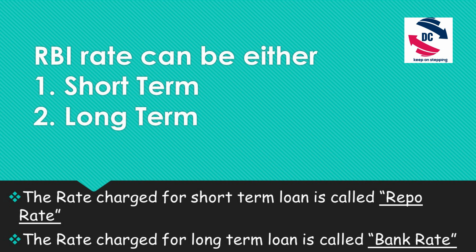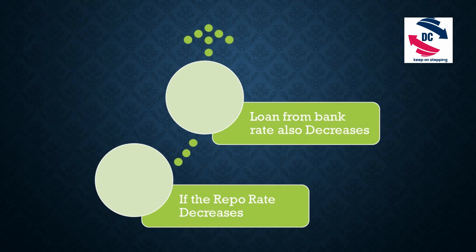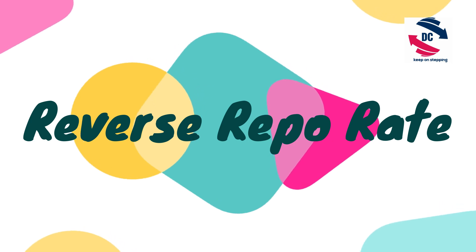The rate charged for long-term loans is called the bank rate. If RBI decides to increase the repo rate, then the rate of loans from bank to customer also increases. If RBI decreases the repo rate, the loan rate for customers also decreases. By controlling the repo rate, RBI can control the money supply in the economy. If a bank has excess money and deposits it with RBI, in return RBI pays a rate of interest called the reverse repo rate.